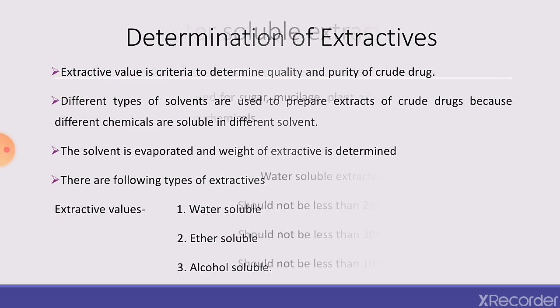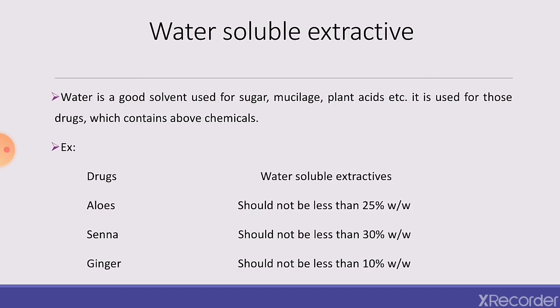Water is a good solvent for sugars, plant acids, and similar constituents. For drugs containing these chemicals, water-soluble extractive value is determined. For example, aloe should not be less than 25%, senna not less than 30%, and ginger not less than 10% of water-soluble extractive.